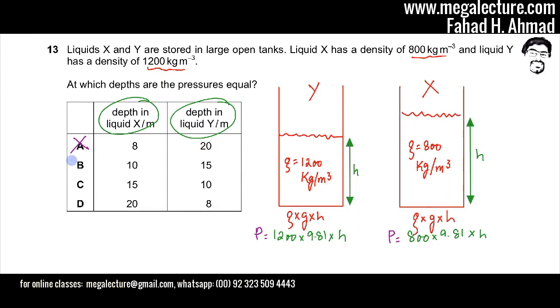Now move to option C. If you move to option C, X is 15, so h would be over here, that's 15. And over here, the other one in Y, the height is 10, so let's put 10 over there. If I do that, I'm going to get the same value because you can do this on your calculator. 12 into 10, that's around 12,000 into 9.81. 800 into 15 is also 12,000 into 9.81. So both are going to give you the same exact pressure values. So you can do the calculation, you're going to get the same exact answer. So see, option C is going to be your correct option for this question.